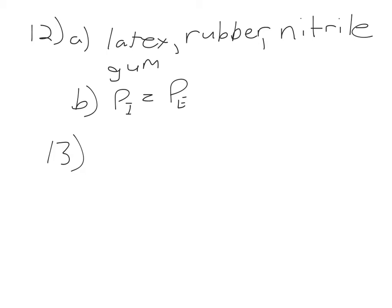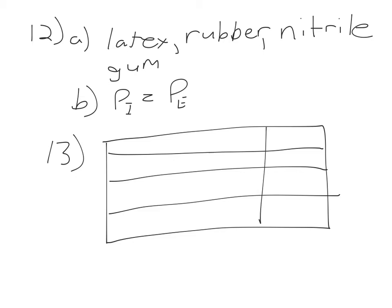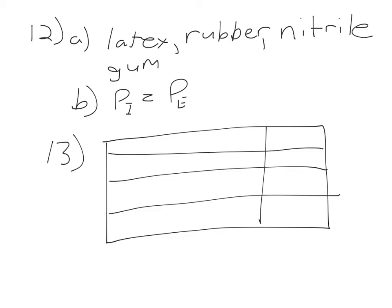Question 13: complete a table for experiments C, D, and E with independent, dependent, and controlled variables. Experiment C says 'adding more gas,' so the independent variable is number of moles — I'm adding more particles each time. The volume is changing, making it the dependent variable. Pressure (both internal and external) and temperature are controlled and do not change.